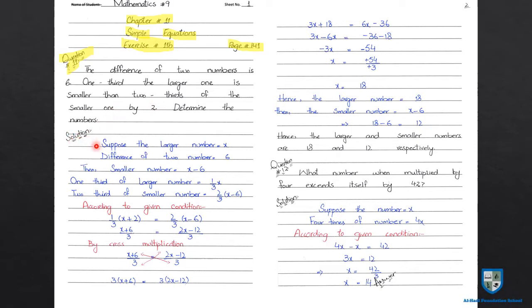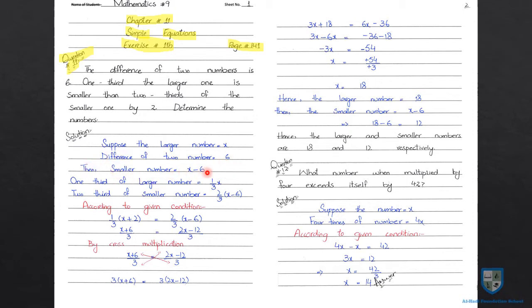Suppose the larger number is equal to x. Then the smaller number is equal to x minus 6.